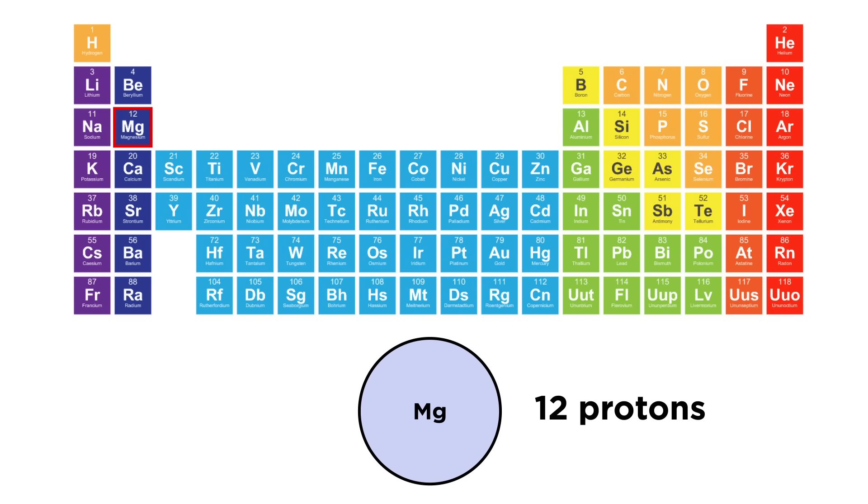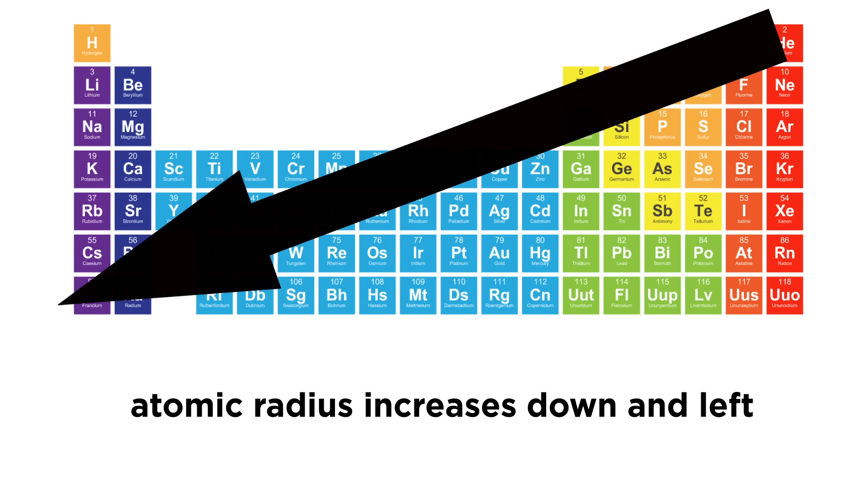As we go to the right, atomic radius decreases because we are moving within a shell, and each element to the right has one more proton in the nucleus than the last, so there is a stronger electromagnetic attraction felt by the electrons, and the radius shrinks. That means overall atomic radius increases going this way on the periodic table.